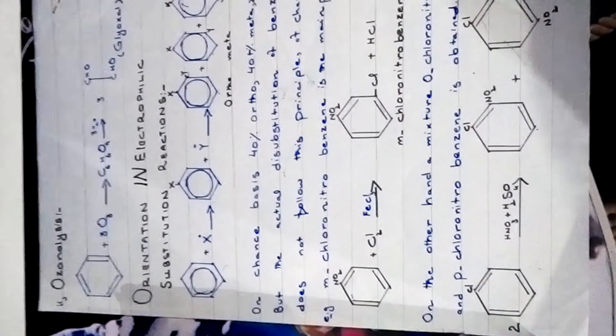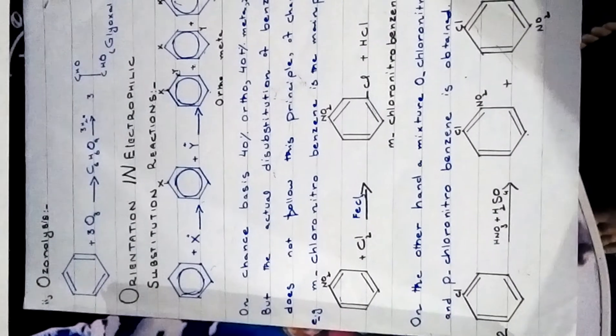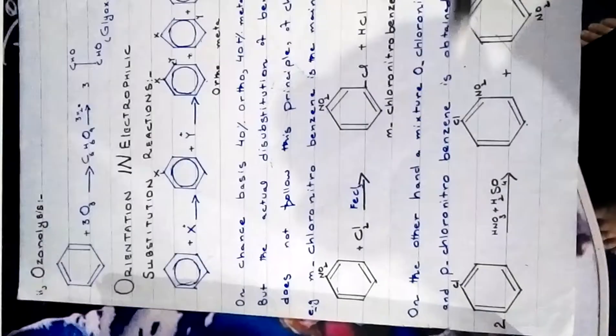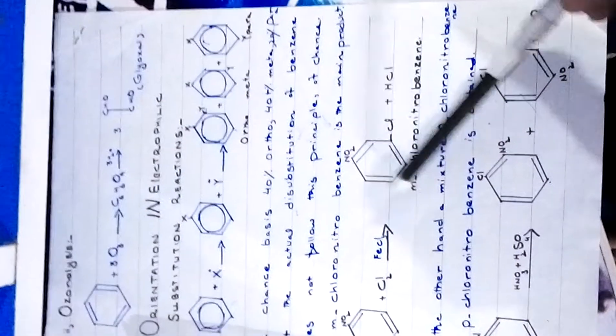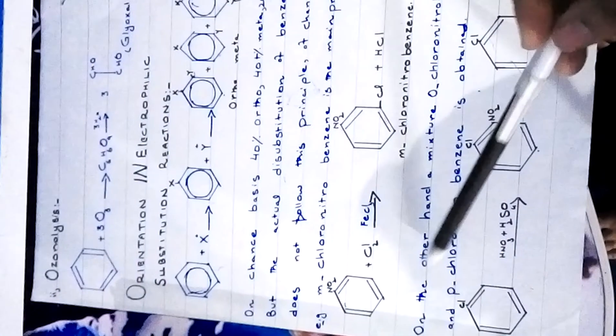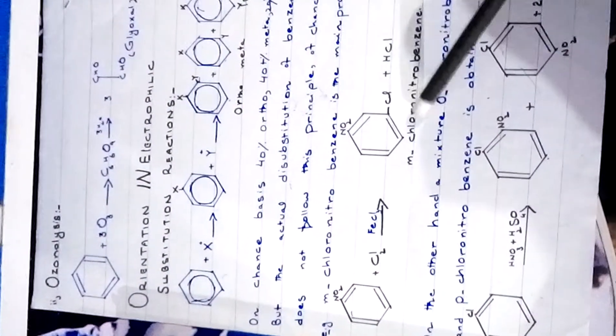For example, this is a nitro group. When it reacts with chlorine, the nitro group is meta directing, so it will direct the incoming chlorine group to the meta position and meta-chloronitrobenzene is formed.